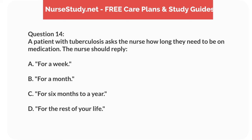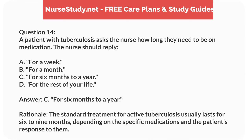Question 14. A patient with tuberculosis asks the nurse how long they need to be on medication. The nurse should reply: A. For a week. B. For a month. C. For 6 months to a year. D. For the rest of your life. Answer: C. For 6 months to a year. Rationale: The standard treatment for active tuberculosis usually lasts for 6 to 9 months, depending on the specific medications and the patient's response to them.